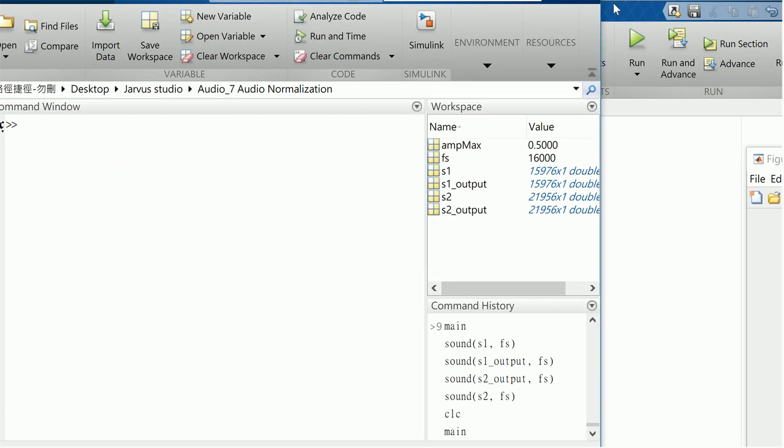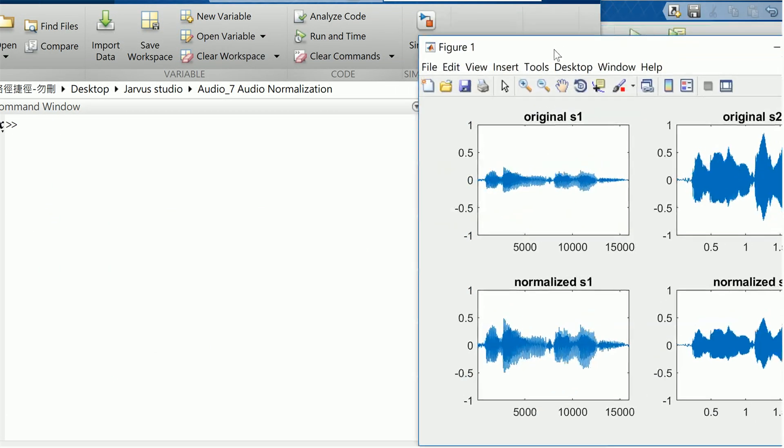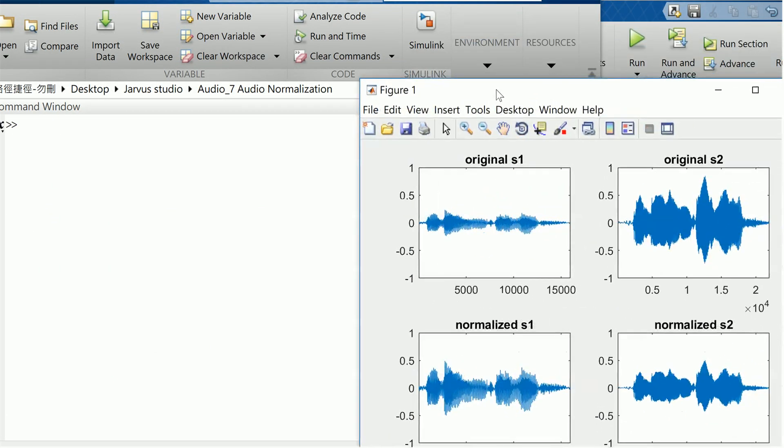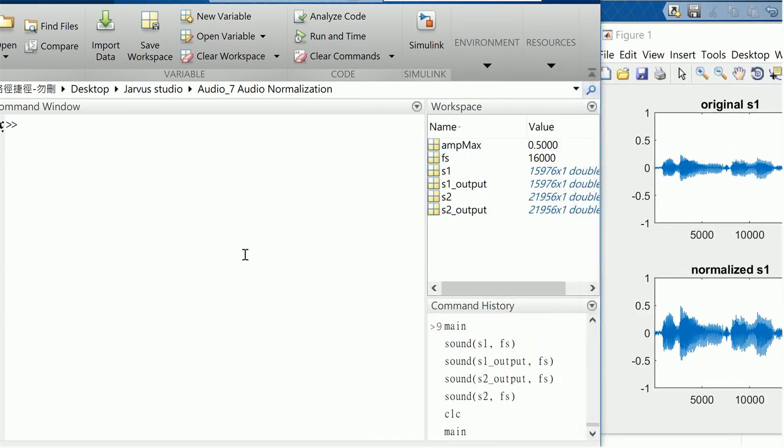First, you can see speech one. Speech one is the original quieter speech. Let's listen to that. We can type sound, x1, and its sampling rate. So let's listen: 'Hello, I'm Jarvis.' So this is the first one.